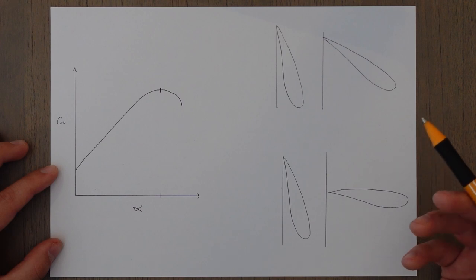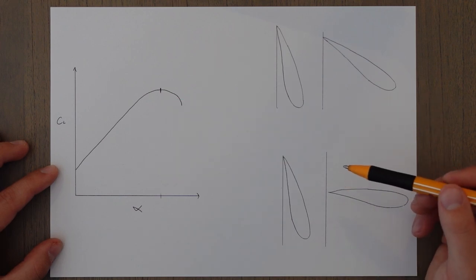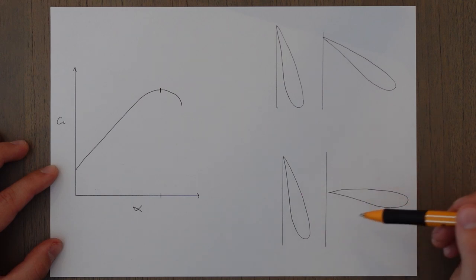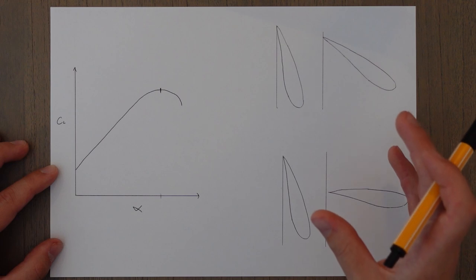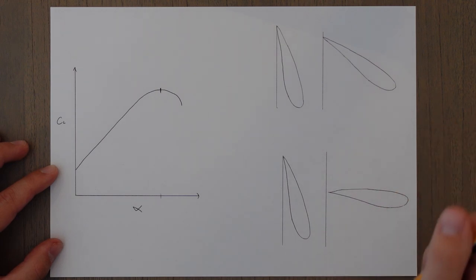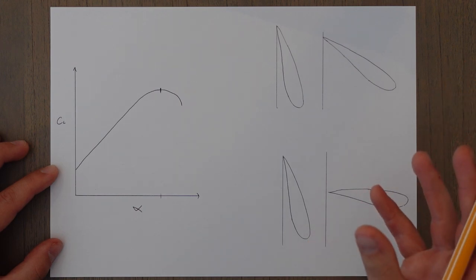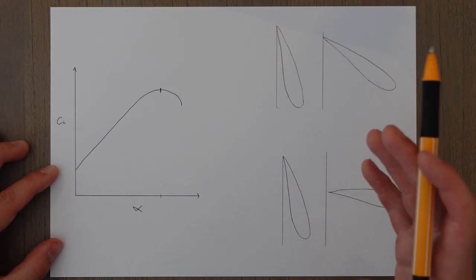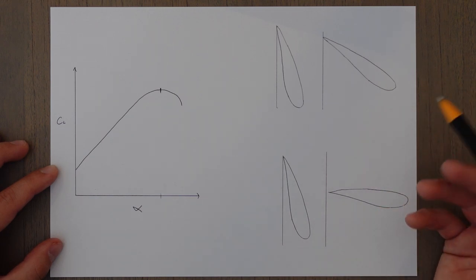The third type of propeller is called a constant speed propeller, and it differs from the adjustable pitch propeller because the adjustment is done automatically. An adjustable pitch propeller is manually controlled — you have to physically set the pitch — whereas with a constant speed propeller, a governor system will take over and make sure the optimum angle is always there to achieve the best amount of thrust.